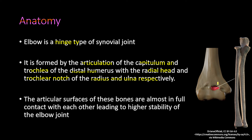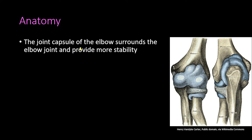As you can see in this picture, the elbow joint is formed by the articulation of the capitulum and trochlea of the distal humerus with the radial head and trochlear notch of the radius and ulna. The articular surfaces of these bones are almost in full contact with each other, leading to higher stability of the elbow joint.